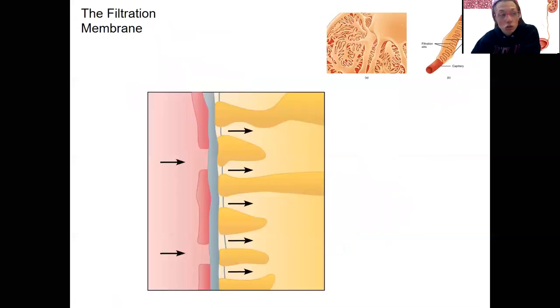This is the filtration membrane. We're looking at a membrane, meaning more than one cell type, separating the blood from the filtrate in the glomerular capsule. Similar to the respiratory membrane, it's made up of more than one layer of cells.